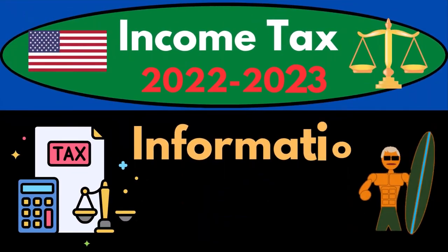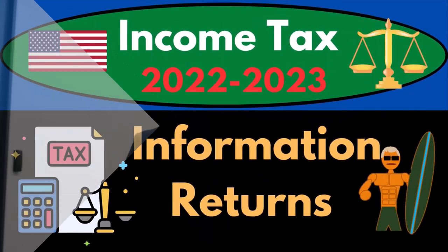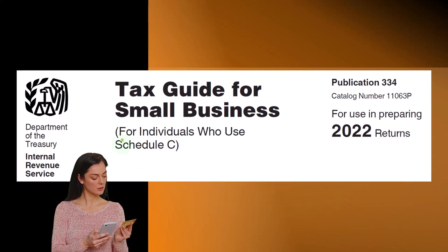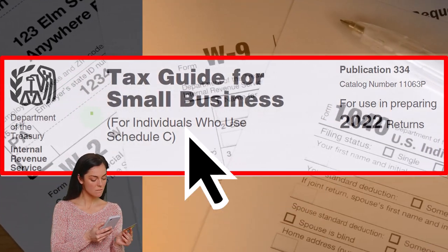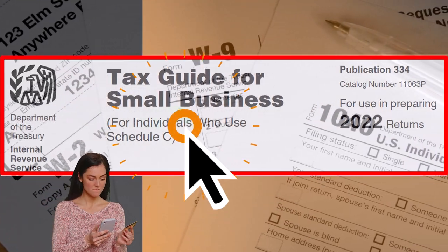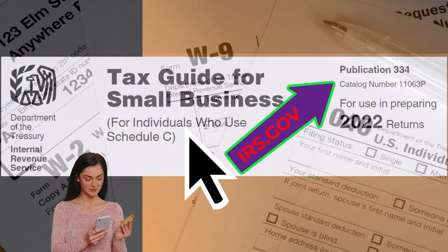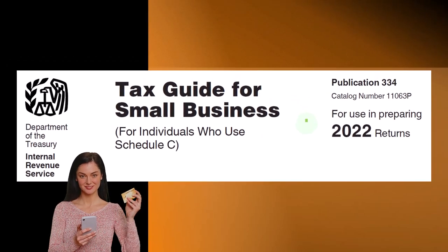Income Tax 2022-2023, Information Returns. Let's do some wealth preservation with some tax preparation. Most of this information comes from the Tax Guide for Small Business for Individuals Who Use Schedule C, Publication 334, Tax Year 2022. You can find it on the IRS website, irs.gov.